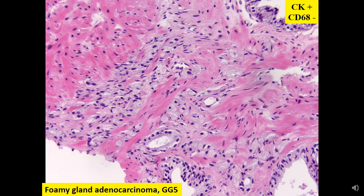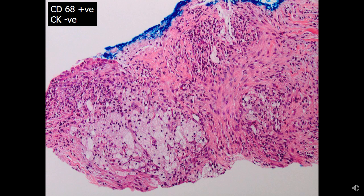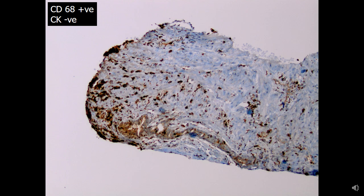Here is an example of poorly differentiated foamy gland adenocarcinoma — at the cellular level this is a great mimicker of xanthomatous infiltration. Helpful features are a rather infiltrative process, focal glandular differentiation, and perineural invasion. The nuclei appear hyperchromatic, and this process was cytokeratin positive and CD68 negative. Another example encountered in prostate biopsy shows haphazard proliferation, but a helpful feature is mixed inflammatory infiltrate — this was CD68 positive and CK negative, supporting the diagnosis of xanthomatous inflammation.